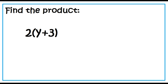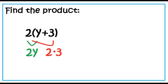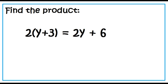Example: 2 times the quantity Y plus 3. Distribute 2 to each of the terms: 2Y plus 2 times 3. The answer is 2Y plus 6.